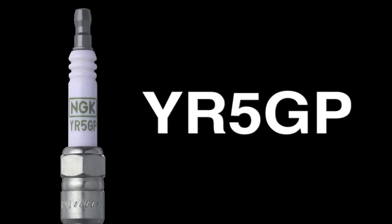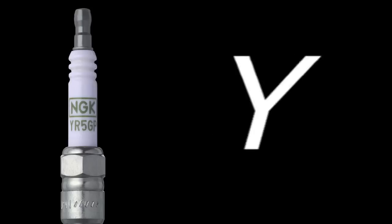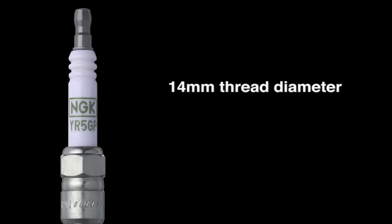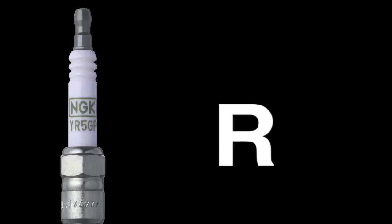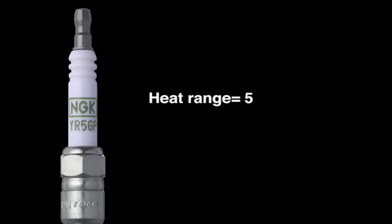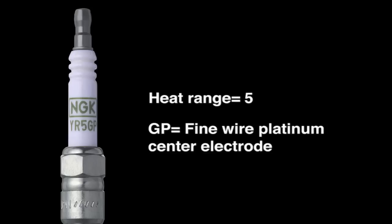For example, the part number YR5GP can be broken down as follows. Y represents 14mm thread diameter, .460 thread reach, tapered seat, non-projected. R represents resistor, 5 represents heat range, and GP represents fine wire platinum center electrode.